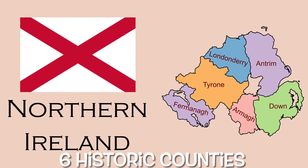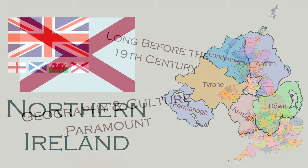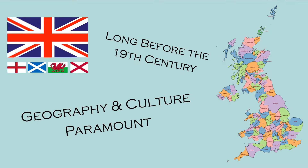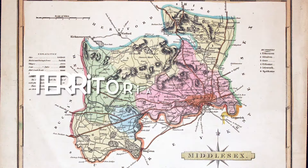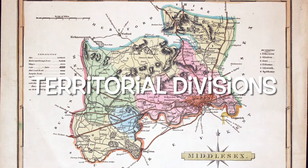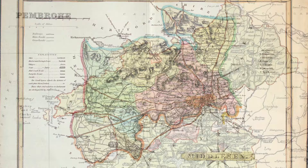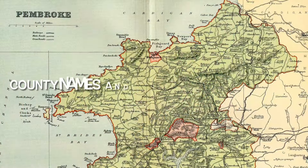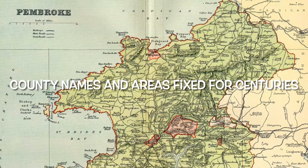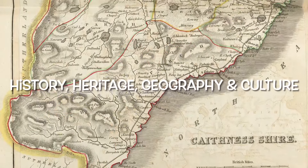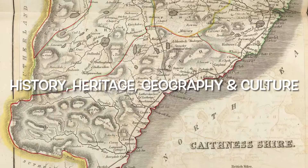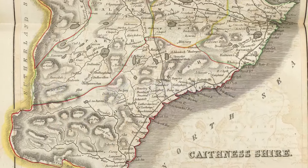While each historic county may have originally been set up for some public purpose or other, long before the beginning of the 19th century, it was their geographical and cultural identities that were paramount. The counties were considered to be territorial divisions of the country, whose names and areas had been fixed for many centuries and were universally known and accepted. They are an indelible part of the history, heritage, geography and culture of the United Kingdom.